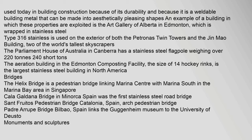Stainless steel is used in building construction because of its durability and because it is a weldable building metal that can be made into aesthetically pleasing shapes. An example is the Art Gallery of Alberta in Edmonton, which is wrapped in stainless steel. Type 316 stainless is used on the exterior of both the Petronas Twin Towers and the Jin Mao Building. The Parliament House of Australia in Canberra has a stainless steel flagpole weighing over 220 tons. The aeration building in the Edmonton composting facility is the largest stainless steel building in North America.